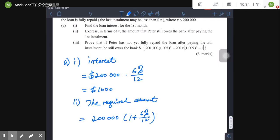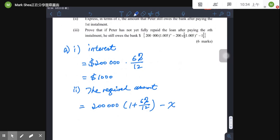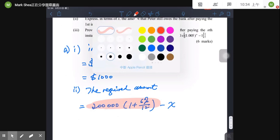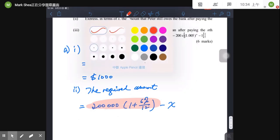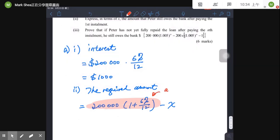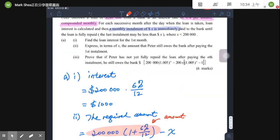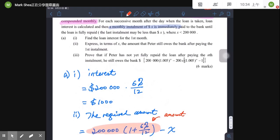minus X. Okay, because the first part is the amount Peter owes to the bank. However, from the question Peter will have a monthly installment, it means that he will pay back to the bank by X dollars. So we need to